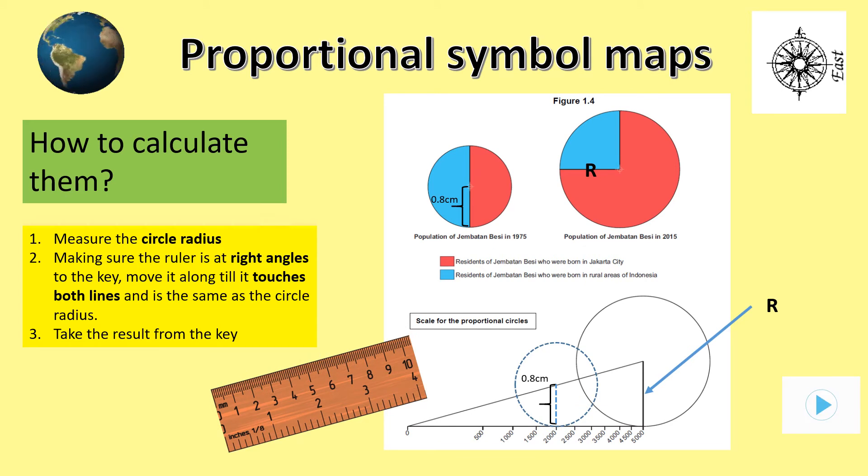For example, on the screen we can see two circles showing the population change of a place from 1975 on the left to 2015 on the right. It's clearly increased its population since it's a lot larger, but by how much?